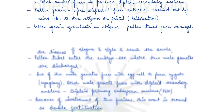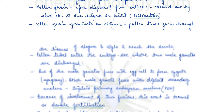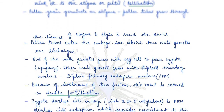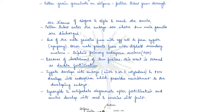Pollen grains get dispersed from anthers and are carried to the stigma — the female sex organ — through wind or organisms like bees. This process is known as pollination. After pollination, the pollen grain germinates on the stigma and through the tissues of the stigma and style, it reaches the ovule and enters the embryo sac.